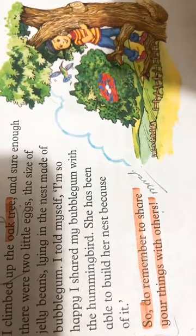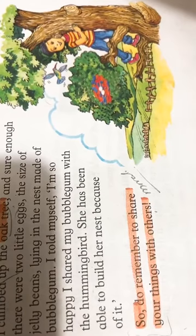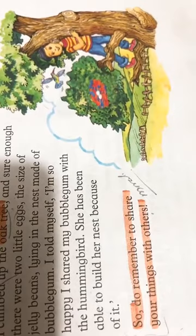The bird thanked the boy and showed him the nest, in which there were two tiny jelly bean kind of eggs laying on the nest. The bird was happy and the boy was happy too because he shared his bubble gum to the bird and the bird was able to make the nest. So this is the moral of the story: do remember to share your things with others to help others.